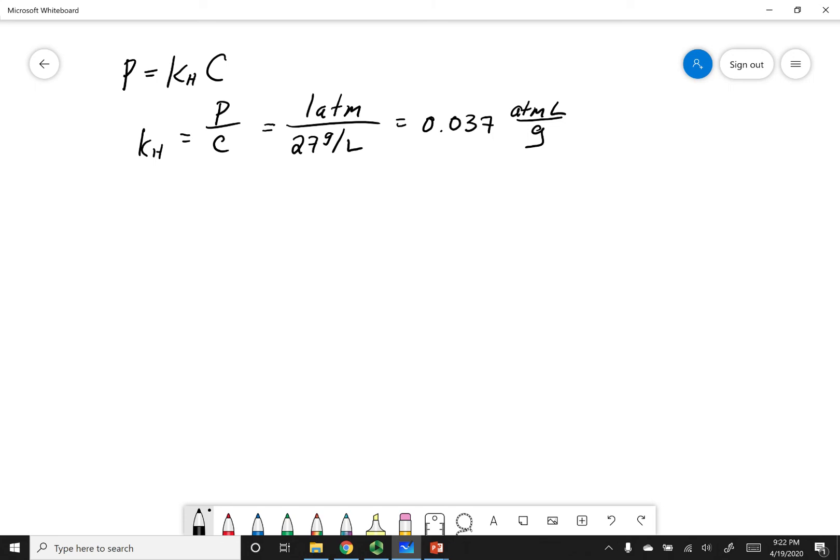Now let's take a look at the second part of that problem, which was to find the solubility at a new pressure. So again, we're going to write Henry's Law, and we're going to solve for concentration this time. Pressure over Henry's Law's Constant equals my concentration. So let's go ahead and plug in our values. 12.5 ATMs, and the Henry's Law Constant that we found, 0.037 ATMs per liter per gram equals our concentration. And so if we calculate this out, what we get is 338 grams per liter.